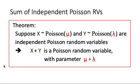Another interesting fact about Poisson random variables is that when we sum independent Poisson random variables — say x is Poisson with parameter mu, and y is Poisson with parameter lambda, and these two are independent — then x plus y will also be a Poisson random variable with parameter mu plus lambda. The parameter is easy to remember: mu is the expected value of x, lambda is the expected value of y, so the expected value of x plus y is mu plus lambda.